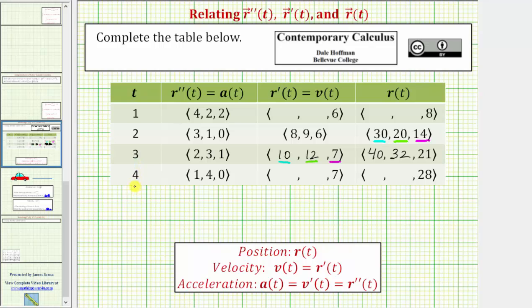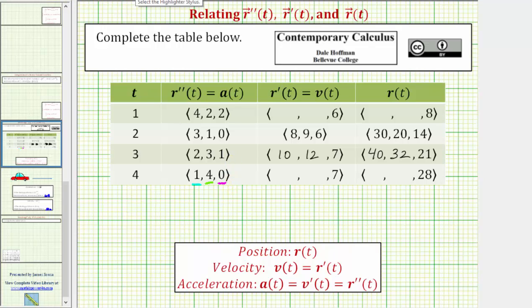And now let's complete the row for t equals four seconds. Over this one second time period, the acceleration in the x direction is one meter per second squared, in the y direction it is four meters per second squared, and in the z direction it is zero meters per second squared. The starting velocity is the velocity at t equals three seconds, which in the x direction is 10 meters per second, in the y direction is 12 meters per second, and in the z direction is seven meters per second.